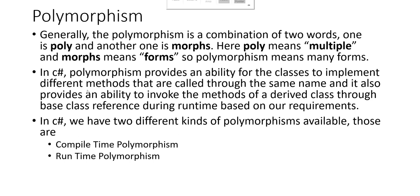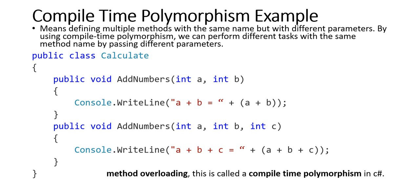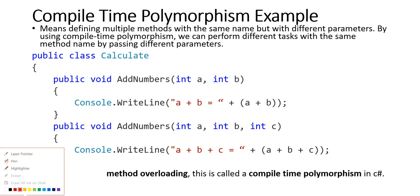We've got two main types: compile-time and run-time polymorphism, and we're going to go through both with some examples. Compile-time polymorphism is essentially having the same method name but with different parameters — it means we would go to a different method depending on which one was called. So in this case, if we called addNumbers with only two parameters in brackets, it would go to this method here.